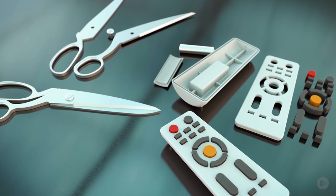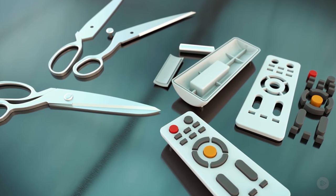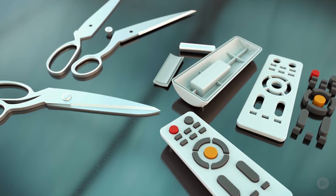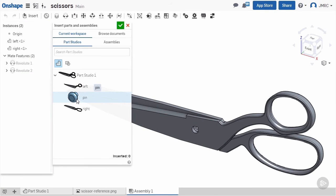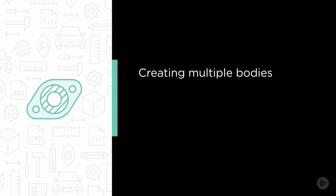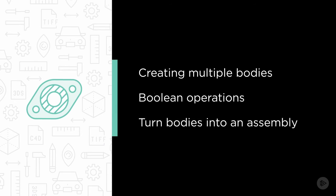In this Onshape course, I will secure your understanding of the essential techniques to create a multibody part design. Some of the major topics that we will be covering are: creating multiple bodies with the extrude command, performing boolean operations to refine the shape of our bodies, and turning bodies into an assembly.